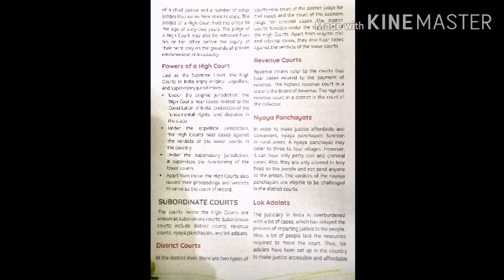Courts below the High Courts are known as subordinate courts, also called lower courts. Subordinate courts include district courts, revenue courts, Naya Panchayats, and Lok Adalats. At the district level, there are two types of courts: the court of the district judge for civil cases, and the court of sessions for criminal cases. The district courts function under the supervision of the High Courts and also hear cases against the verdicts of lower courts like Gram Panchayats and Naya Panchayats.